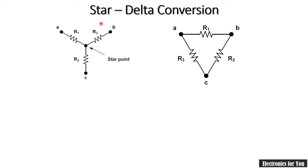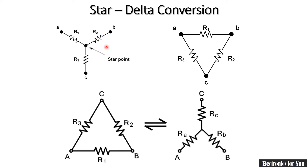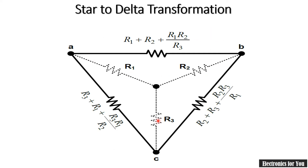In our previous video I explained what is star connection and what is delta connection in detail, along with the related formulas. A star network can be converted into a delta network as well as a delta network can be converted into a star network. For that we require some formulas. This is a star to delta transformation where we have a formula for this resistance. The star network is drawn here by dotted line and the equivalent delta network formula for this resistance is R1 plus R2 plus R1 into R2 divided by R3.